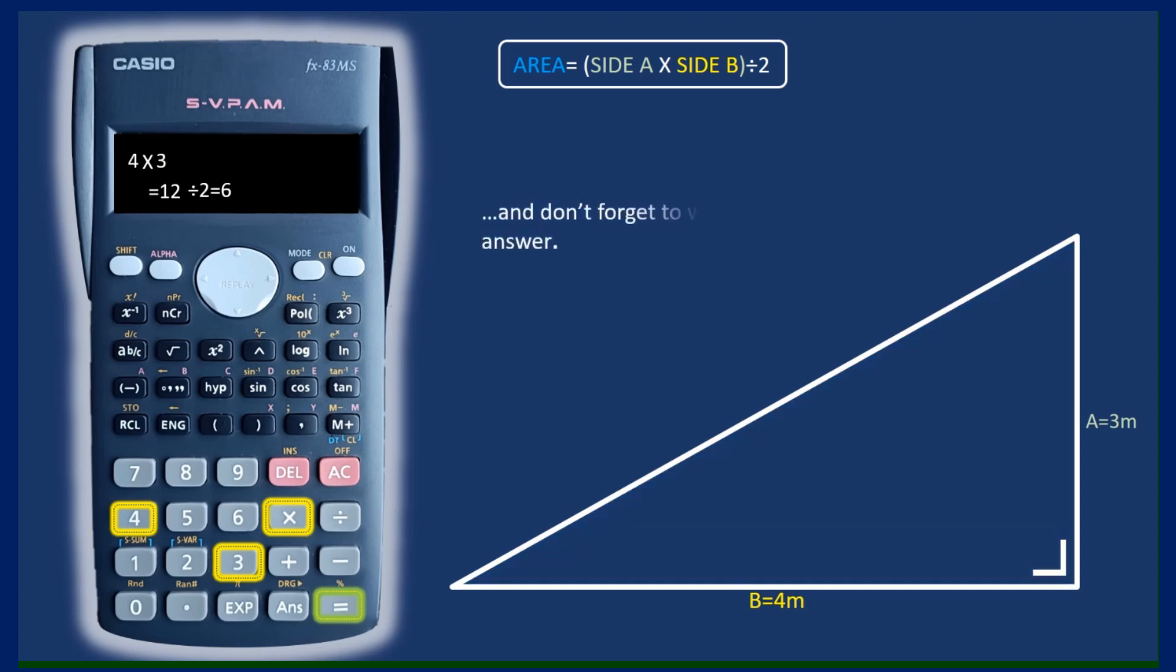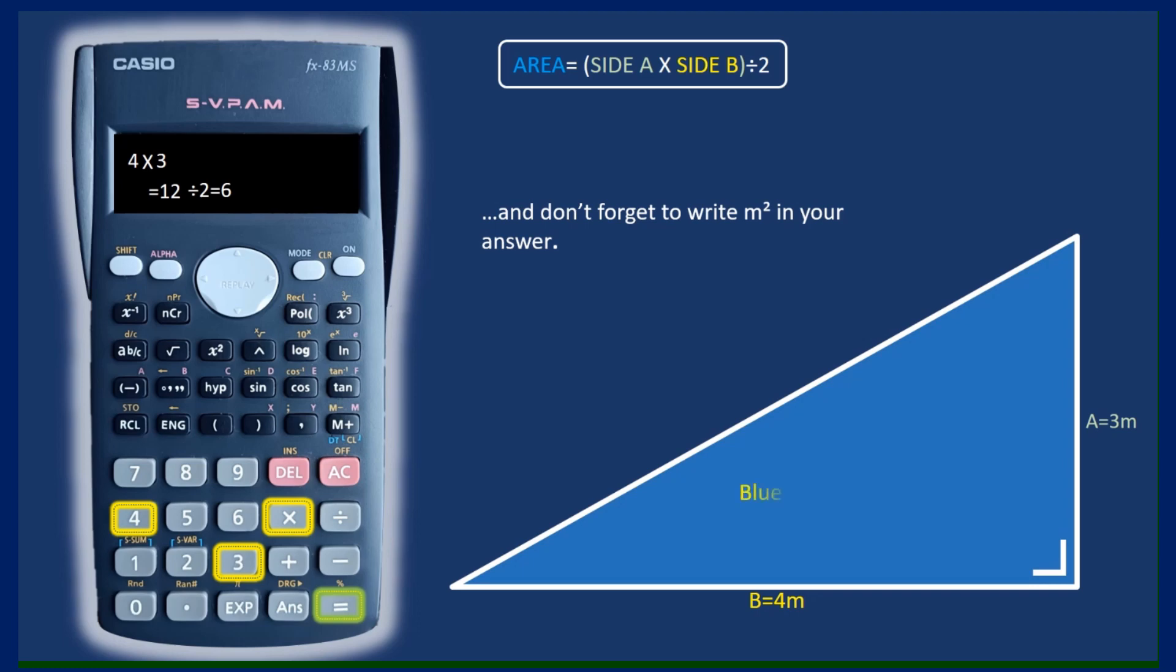So just re-emphasising the point here now on the screen. You'll see the little arrow coming in there just to emphasise that point. That's very important that you always put that in any area question. So that's it in relation to finding the area of a right angle triangle.